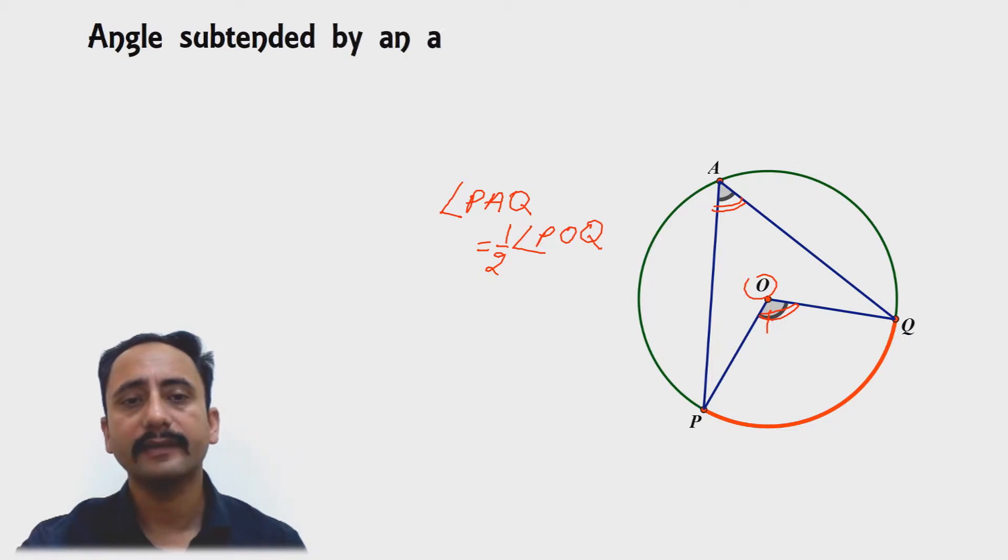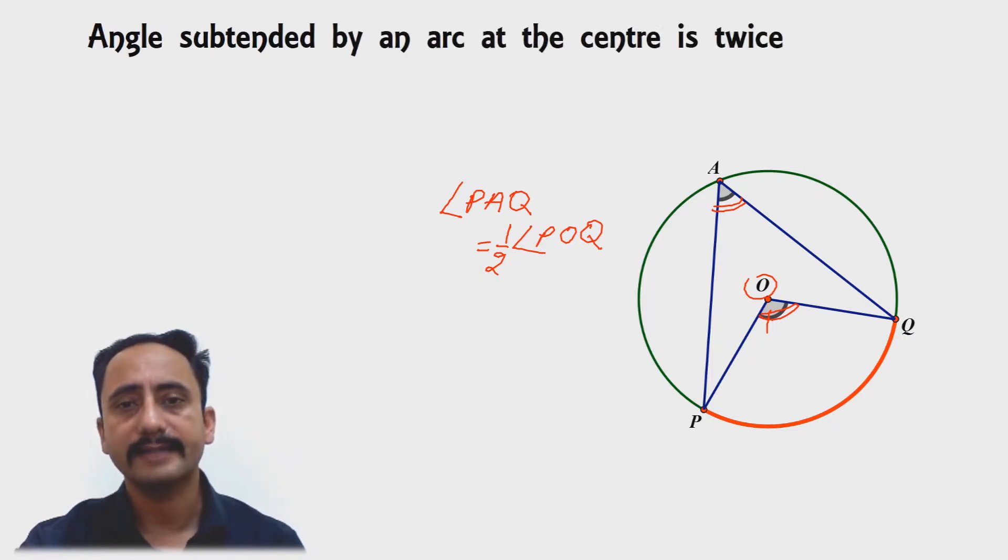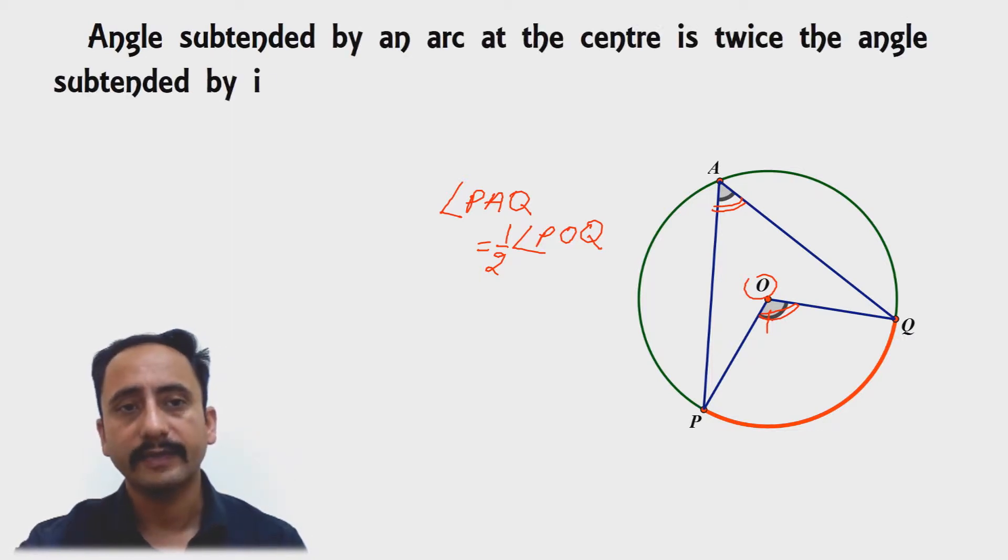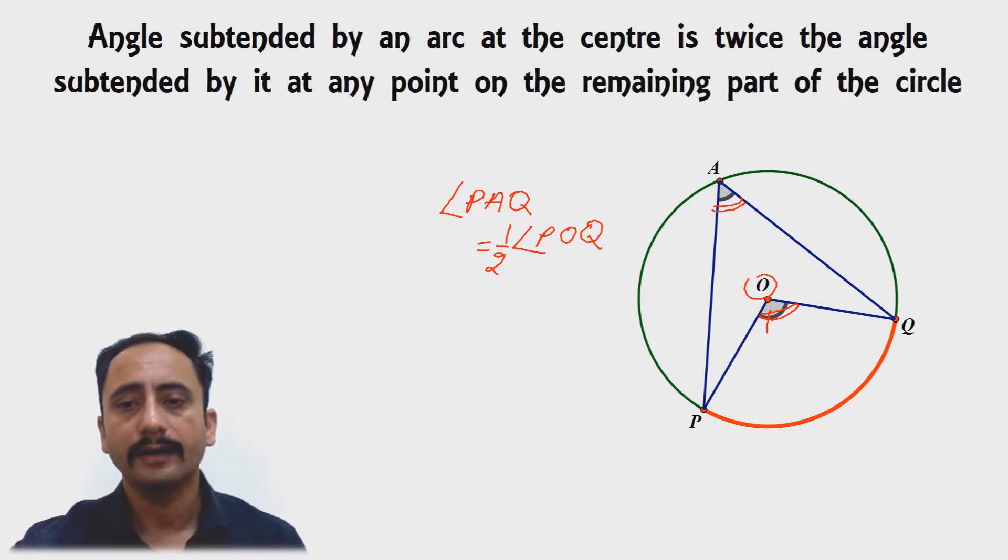The theorem states that the angle subtended by an arc at the center is twice the angle subtended by the same arc in the remaining part of the circle. Let us see the proof of this theorem.